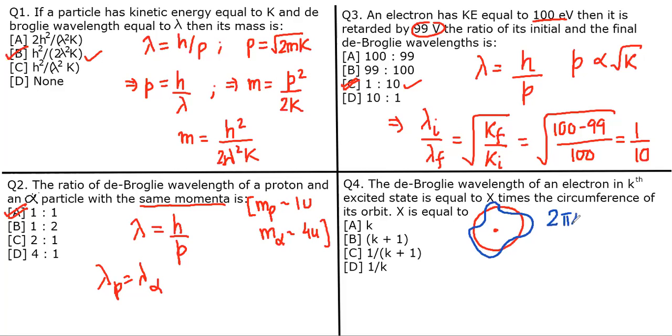So C = nλ. Now notice one thing: if there is a kth excited state, then n = k + 1. Therefore, λ = C/n = C/(k+1).